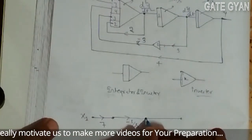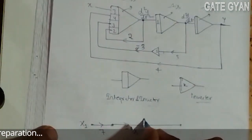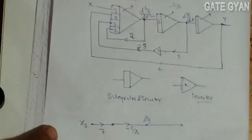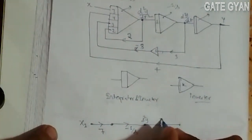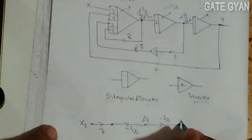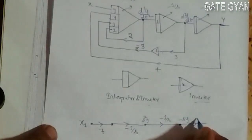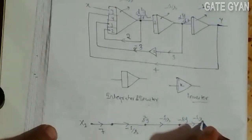This is my d²y/dt² point, so it will be s²y. When multiplied with -1/s, this point will be -sy after multiplying with the inverter circuit.